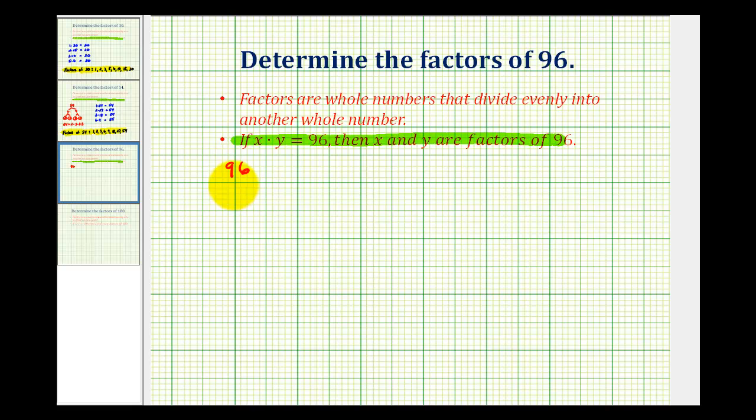Well 96 is even so we could break this down into 2 times 48 where 2 is prime. You can break down 48 into 4 times 12. 4 breaks down into 2 times 2 which are both prime. 12 breaks down into 3 times 4 where 3 is prime and then 4 is 2 times 2. So the prime factorization of 96 would be 1, 2, 3, 4, 5 factors of 2 and 1 factor of 3.